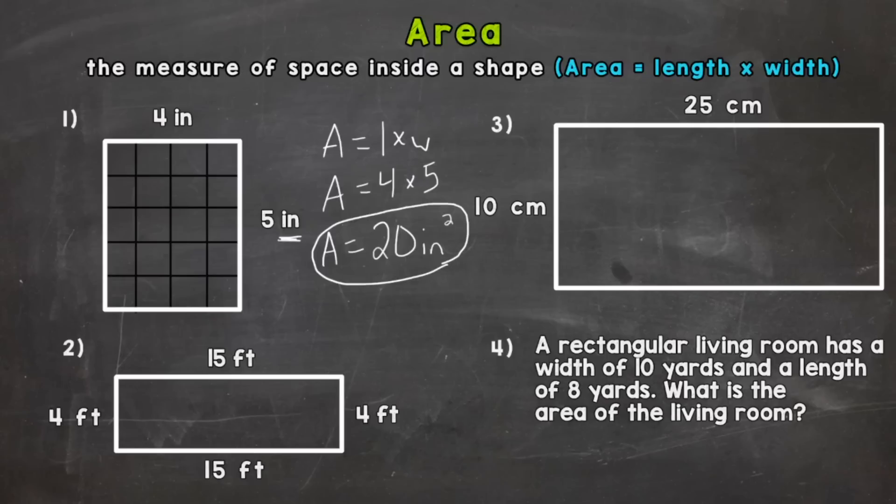And I did something so we can kind of visualize what those 20 square inches look like that cover or fill that rectangle. So we have four inches going across so I put four squares going across and we have five inches going down so one two three four five.